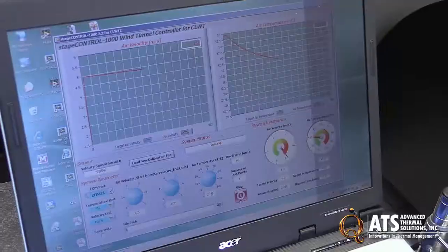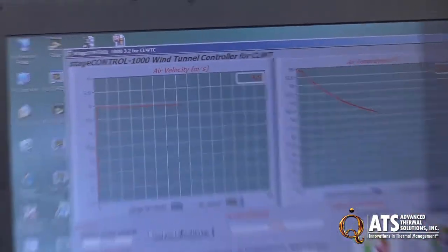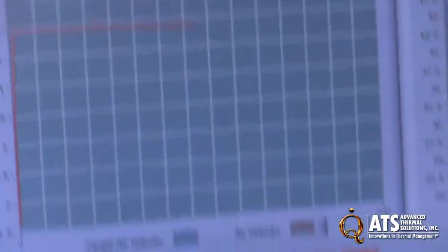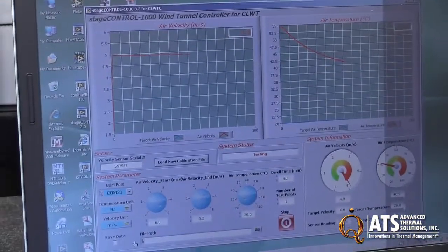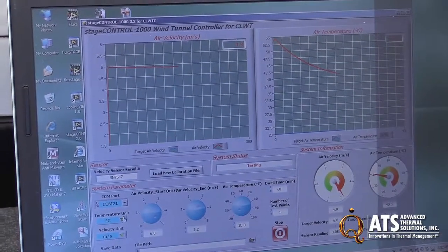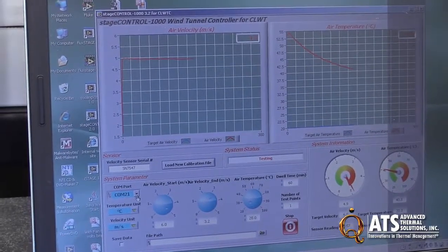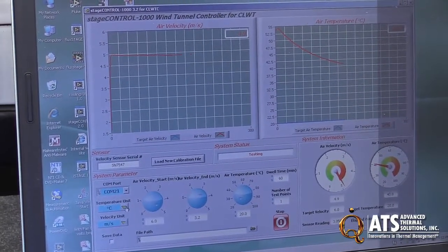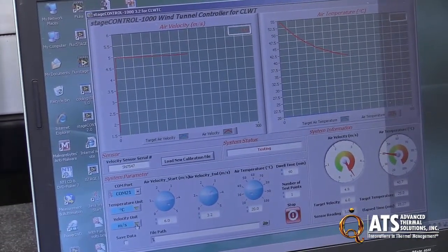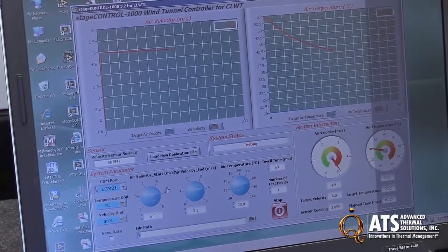The software is called SAGE Control 1000, version 3.2, and has multiple inputs. First, when you connect the instrument to the computer, it has to automatically detect the COM port, which in this case is COM21. Then you can choose the unit for temperature—either degrees C or degrees F—and also the unit for velocity: meters per second or feet per minute.